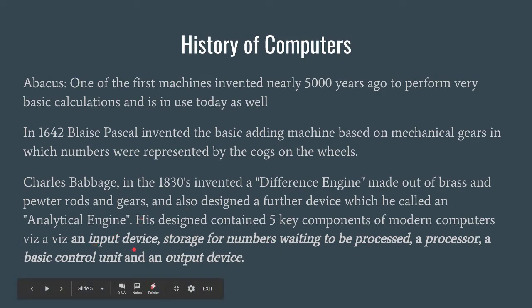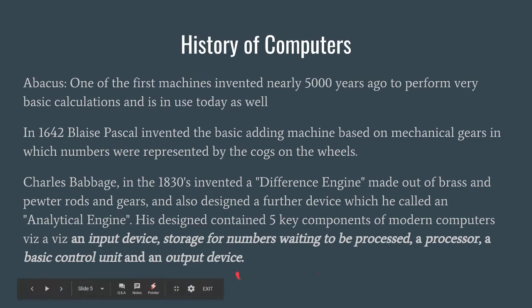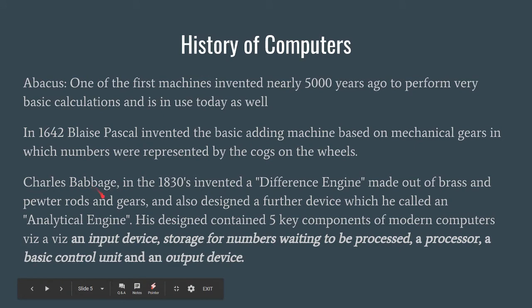Namely they were the input device, a storage for numbers — or rather we can call it the memory — there was a processor, there was a basic control unit, and an output device. This is the reason why Charles Babbage is known as the father of computers, because these basic five components which he introduced in his analytical engine form the major part of our advanced computers that we use today. All credit to the invention of the computer goes to Charles Babbage.